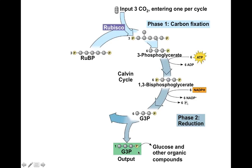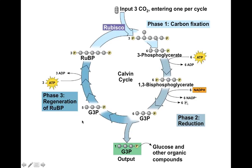One of those G3P molecules can leave the cycle, leaving five molecules of G3P. We have to regenerate ribulose bisphosphate. Going from six to five three-carbon molecules gives us fifteen carbon atoms total — five times three — which we can rearrange with a little ATP hydrolysis to form three five-carbon molecules, which is ribulose bisphosphate. So we're back to the CO2 acceptor.